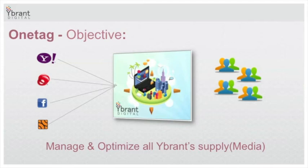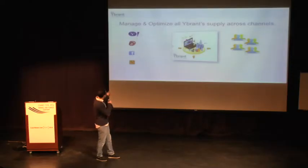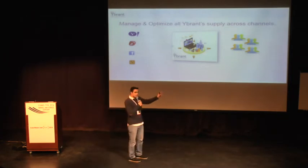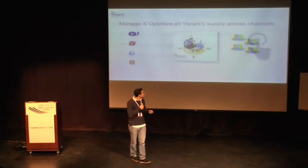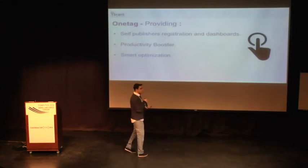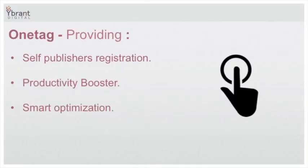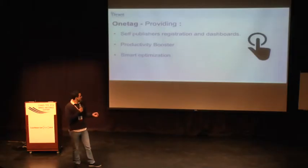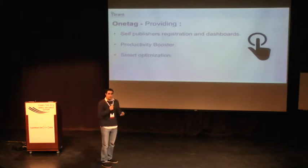What is OneTag? The OneTag product is aimed to manage and optimize all our media. You can consider OneTag as a junction between our supply media and our advertisers and campaigns. We know how to decide in real time which ads should be shown to the relevant users. OneTag provides self-publisher registrations — a one-stop shop for publishers — and is a productivity booster for campaign managers. It also has a smart optimization engine behind the scenes.